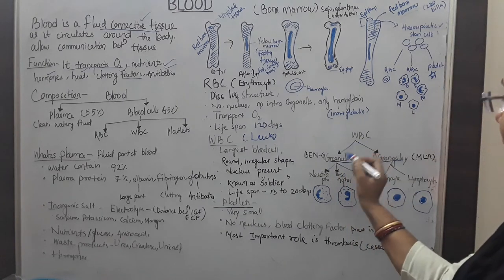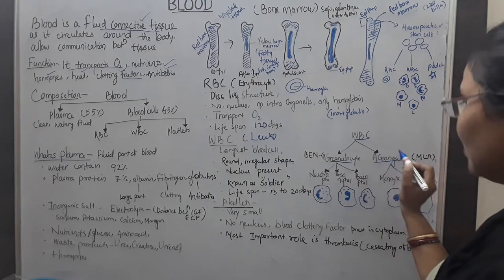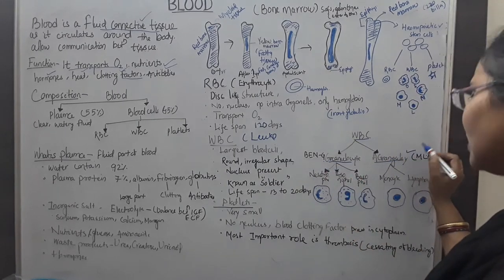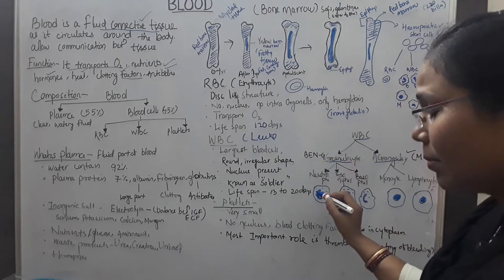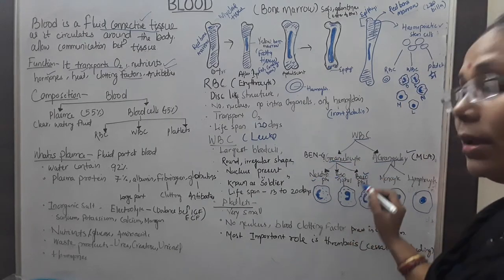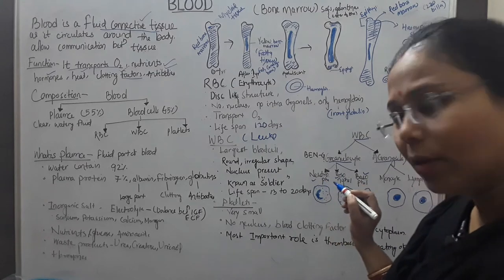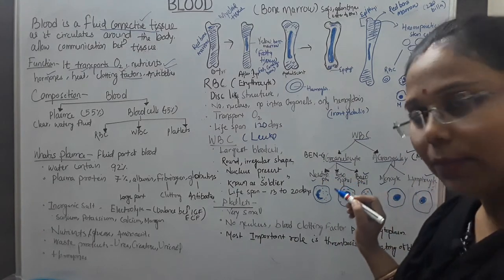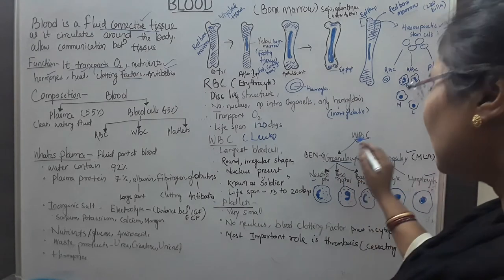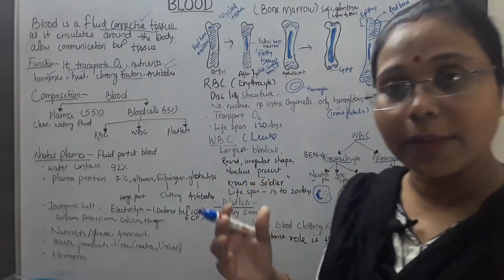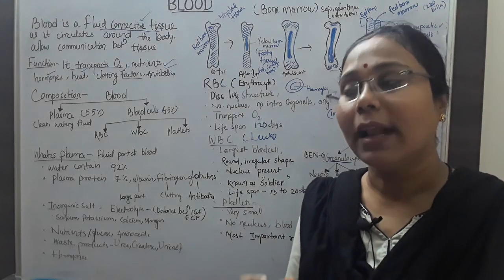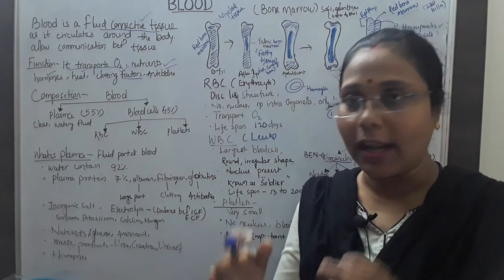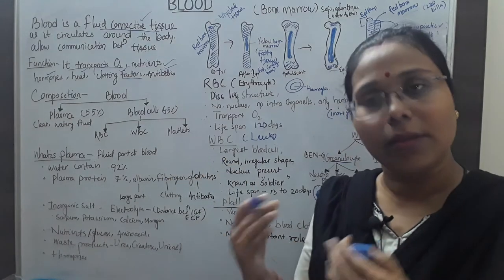WBC is of two types: granulocytes and agranulocytes. Under granulocytes come neutrophils, eosinophils, and basophils; under agranulocytes come monocytes and lymphocytes. The role of WBC is to produce antibodies in the body, helping to fight against diseases and infections and not allowing disease to enter the body — making WBC the soldier and defense system of our body.